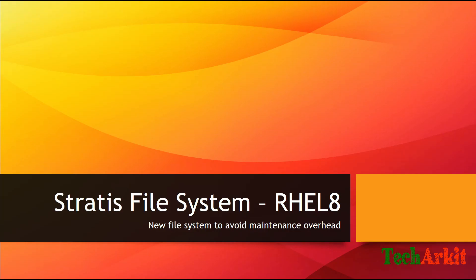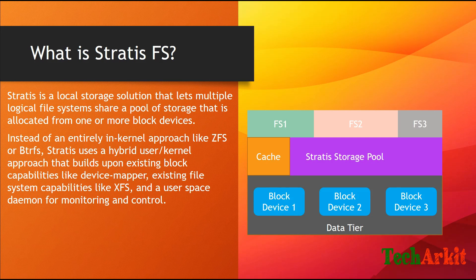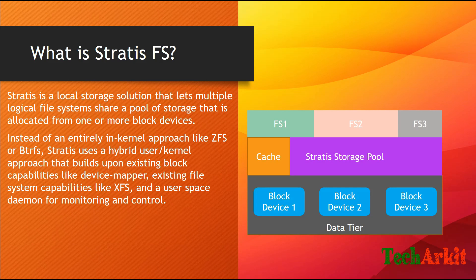Stratis is a local storage solution that lets multiple logical file systems share a pool of storage allocated from one or more block devices. As shown in the diagram, block devices 1, 2, and 3 represent physical hard disks. These are called the data tier. Combining all these block devices forms a Stratis storage pool. Within the pool you can also create a cache tier to increase performance.